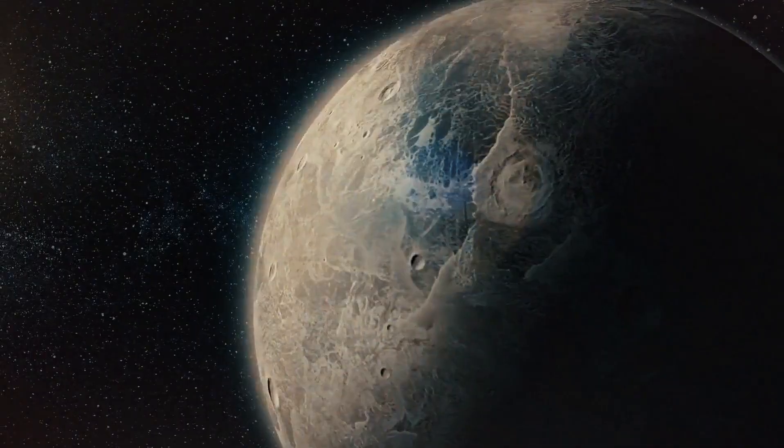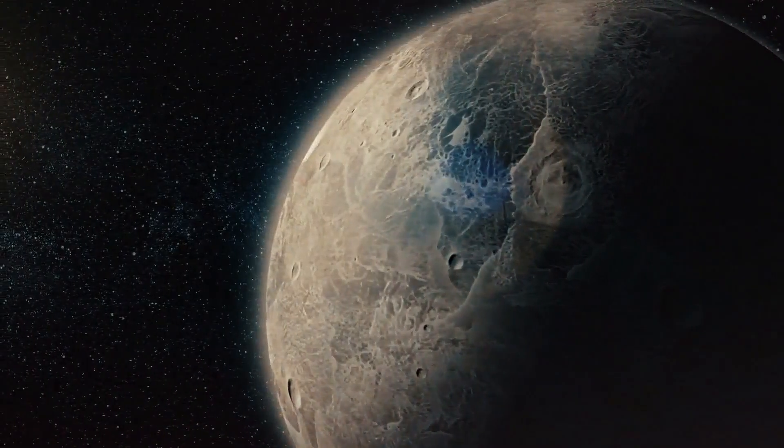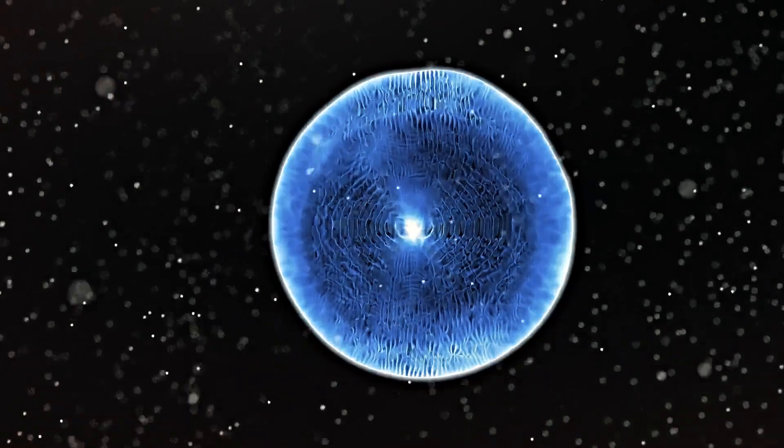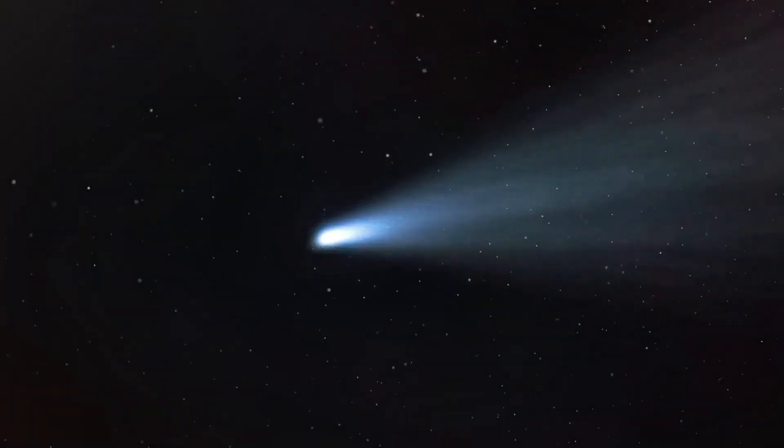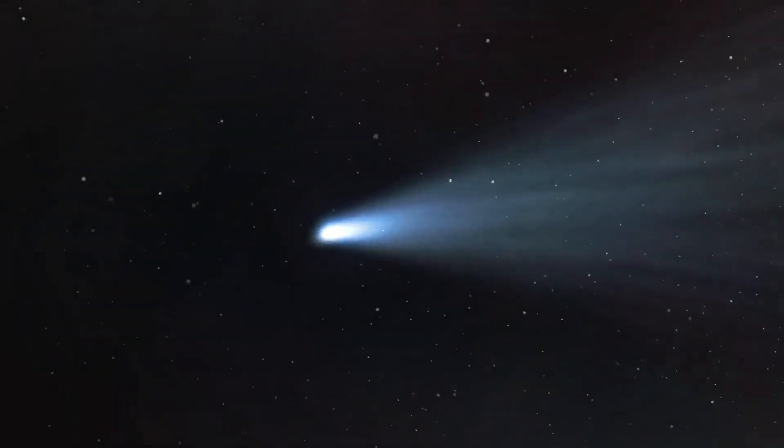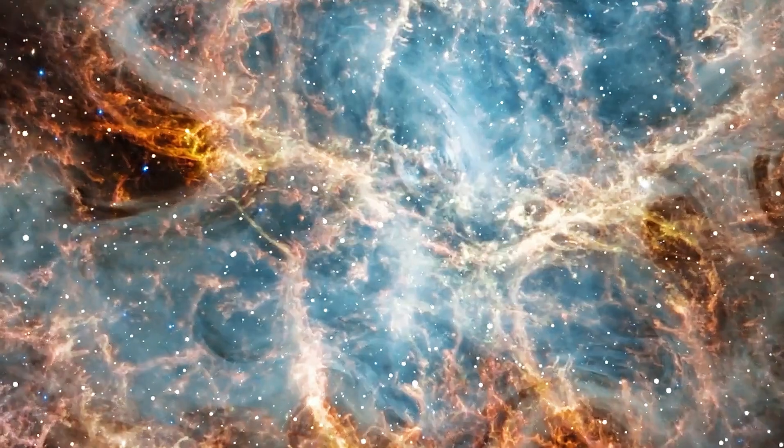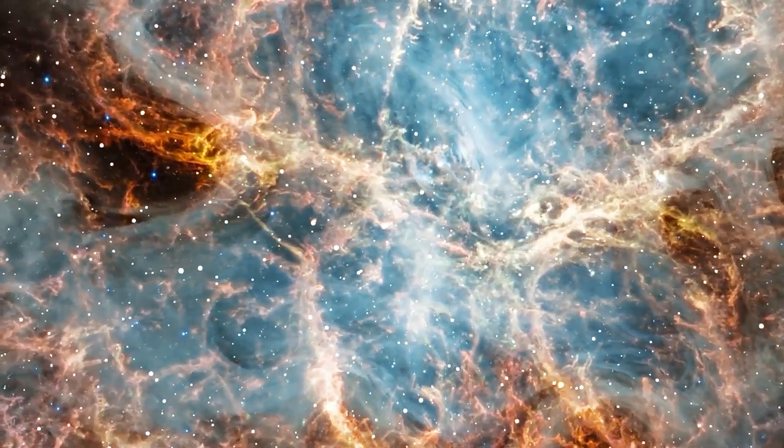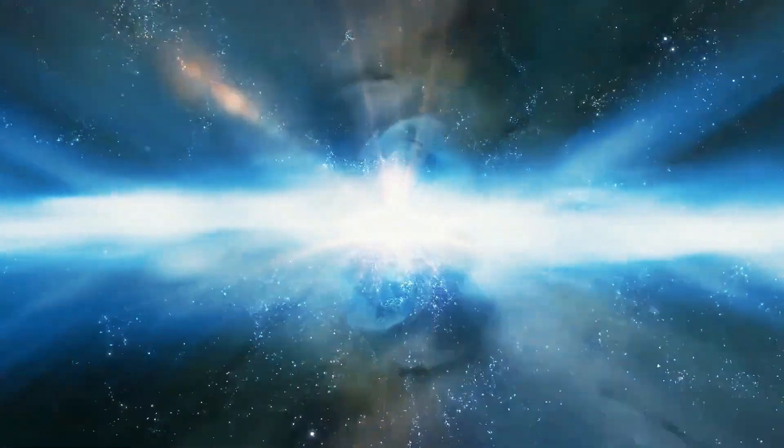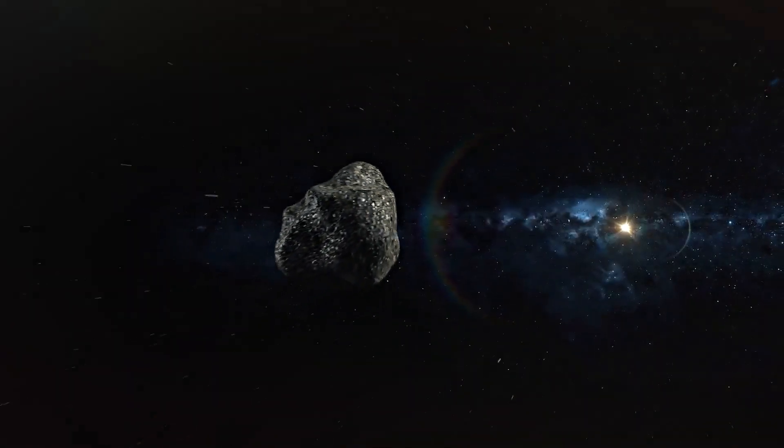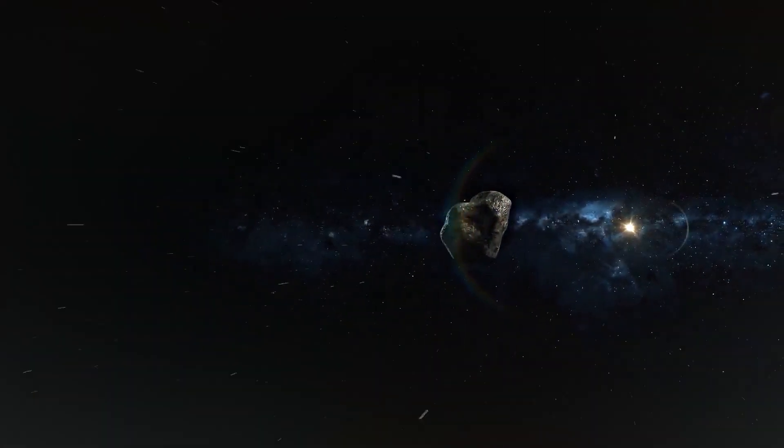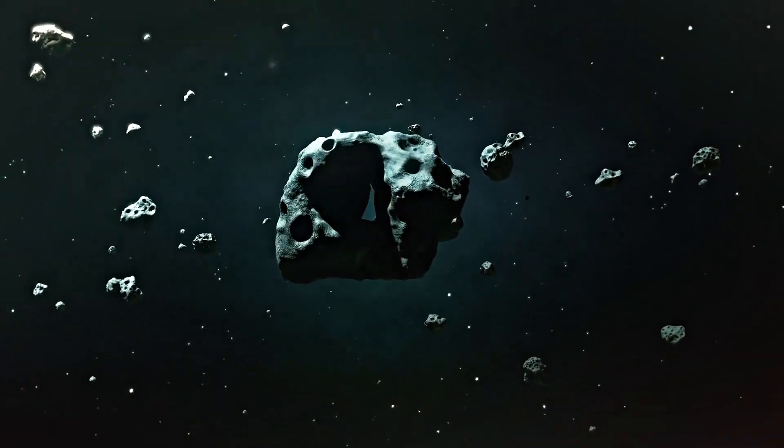Its trajectory wasn't elliptical like a typical comet. It was hyperbolic. That meant one thing: this object came from outside our solar system. It's only the third confirmed interstellar visitor in human history, after Oumuamua in 2017 and Borisov in 2019. But unlike those two, 3i Atlas is being observed in unprecedented detail by the world's most advanced telescopes.